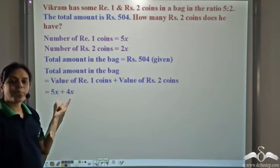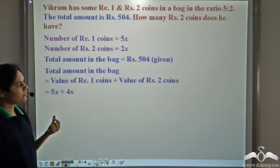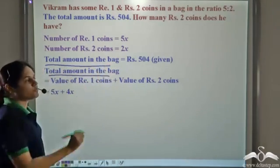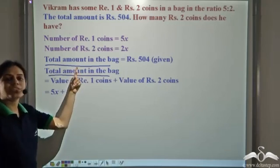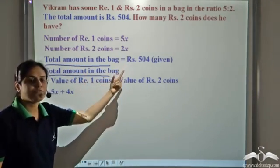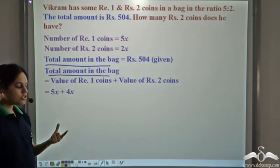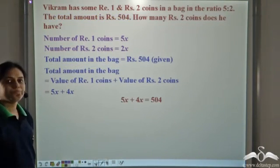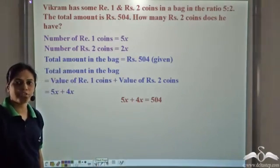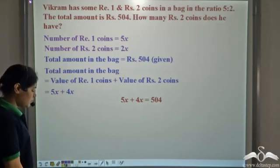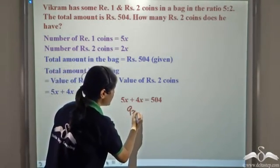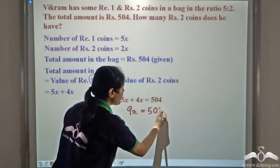So this is the total amount of money in the bag. Now Rupees 504 should be equal to this, because both represent the total amount of money in the bag. So let us equate these two. Equating, we get 5x plus 4x is equal to 504. Now 5x plus 4x is 9x, so we have 9x is equal to 504.